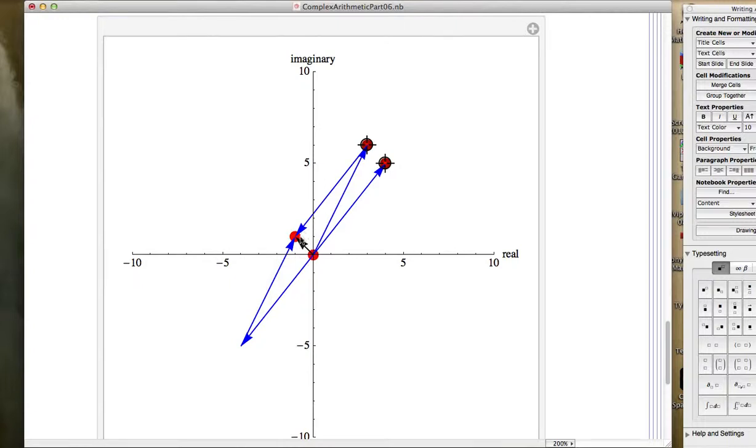So this is one way to visualize the complex subtraction. 3 plus 6i minus 4 plus 5i, this blue arrow minus this blue arrow gives this black arrow. It's a little bit quicker and maybe more natural to translate this black arrow so it starts up here at 4, 5 and ends right there at 3, 6.